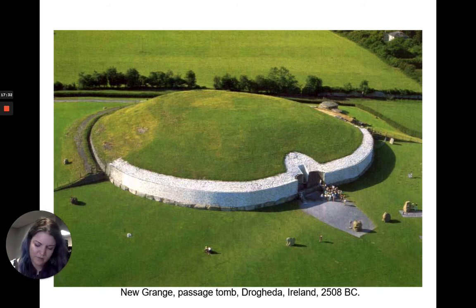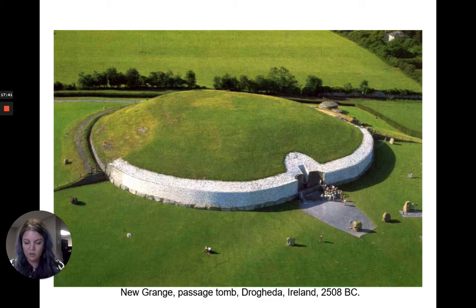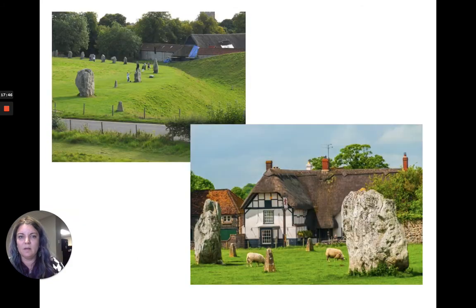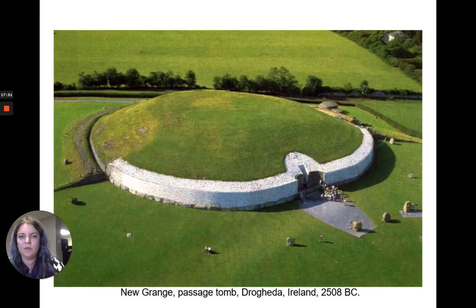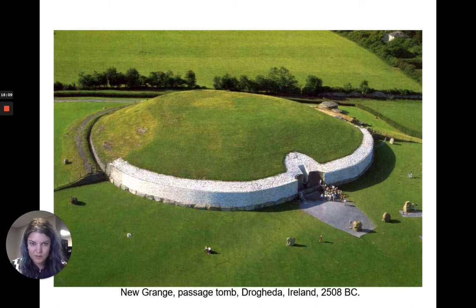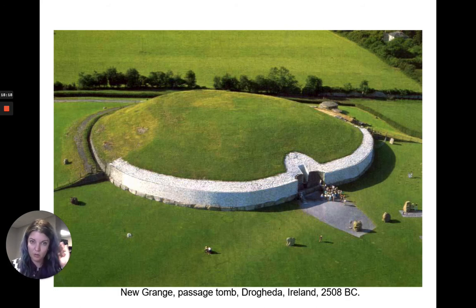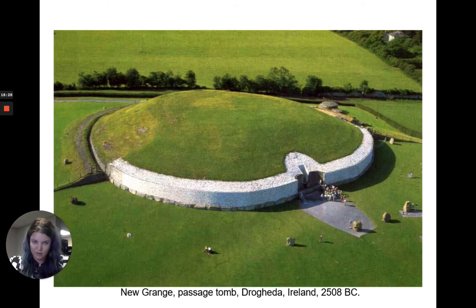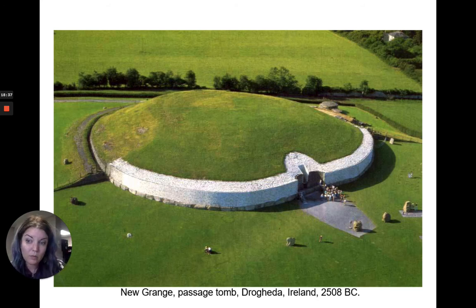Now we're going to go over to Ireland, specifically to the Boyne Valley — B-O-Y-N-E — in eastern Ireland, to look at a passage tomb. This is Newgrange, probably the most famous Neolithic passage tomb. It's about 5,200 years old. In terms of dimensions: it's about 279 feet in diameter and 43 feet high. It doesn't seem that huge from an aerial view until you notice that the little dots are people — its whole area is about an acre. It's a monumental structure to have been created 5,200 years ago.